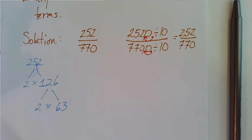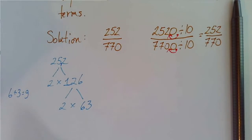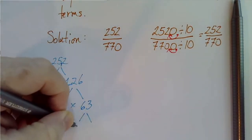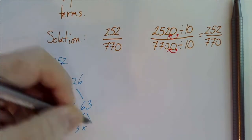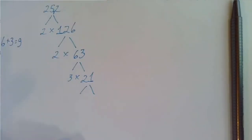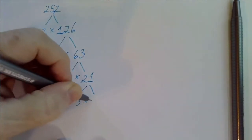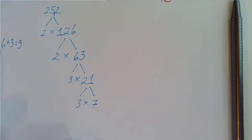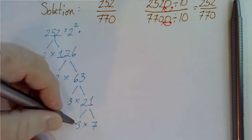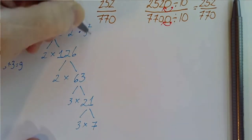6 plus 3 is 9 and 3 goes evenly into 9. So 3 will go evenly into 63. 3 goes into 6 twice. 3 goes into 3 once. And we know about 21. That's just 3 times 7. So now let's gather. We have two 2s, two 3s, and one 7.